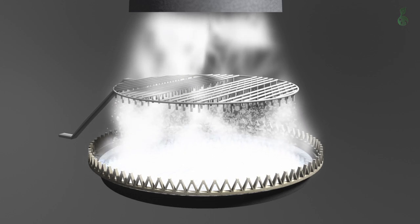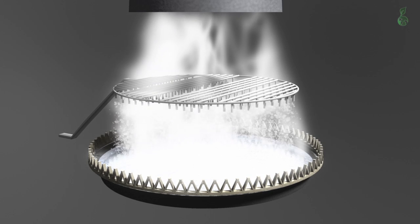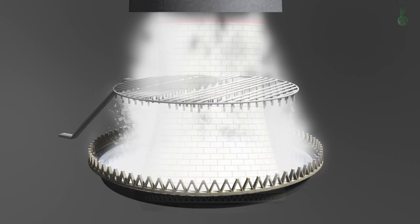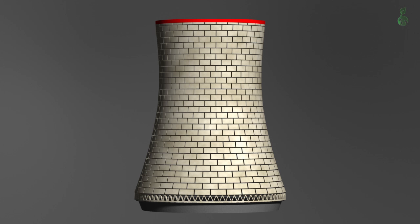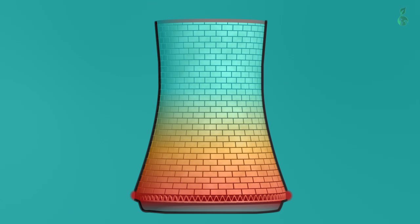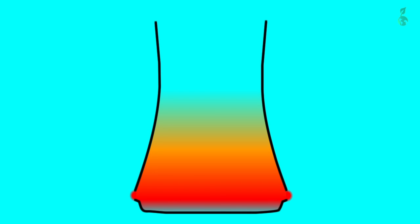Natural draft wet cooling towers function according to the simple principle of the stack effect, also known as natural circulation. Since warm air is less dense than cold air, warm air rises due to buoyancy and escapes out of the upper opening of the tower. This leads to a self-preservation of the stack effect.